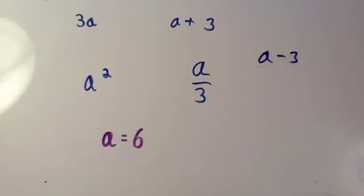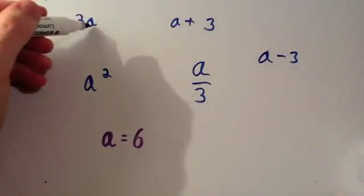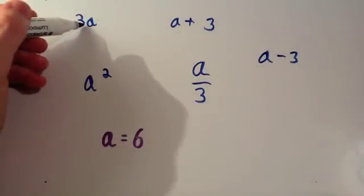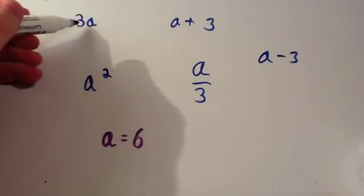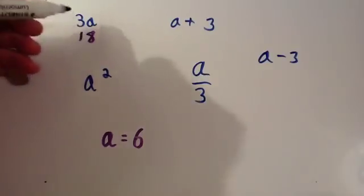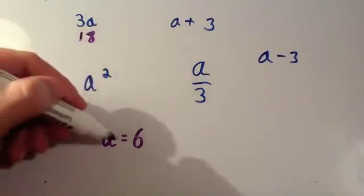So let's work them out one at a time. The first one, 3 times a. Well, this means 3 times a. Well, a is 6. So it means 3 times 6. 3 times 6 is 18. So 3a is 18, if a was 6.